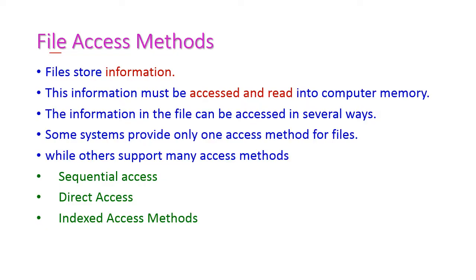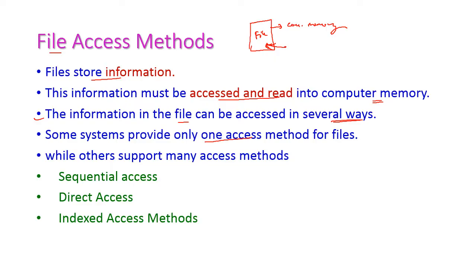We know a file stores information. It contains information and this information must be accessed and read into computer memory. All these files will be stored in the computer memory. This information in the file can be accessed in several ways. There are different methods to access a file. Some systems provide only one access method and some systems support many access methods. The different methods are sequential access, direct access, and indexed access.